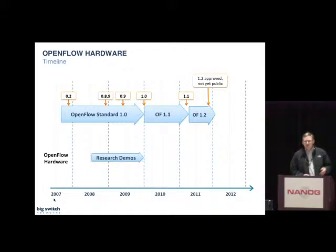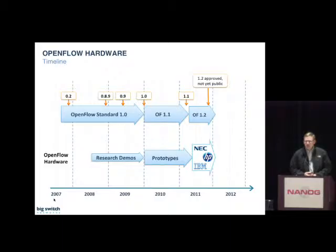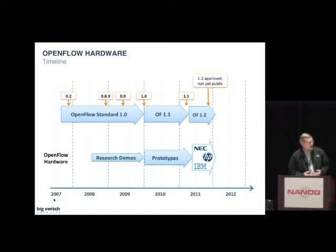Looking at how switches have been developed in parallel to the standards: in mid-2008 we started doing first research demos — the first ones were NEC, Cisco, Juniper, and HP. In 2010 we started seeing implementations move out of research labs and universities more into the development units of switch vendors. Then in May of last year, NEC, as the first company, offered a generally available OpenFlow switch, followed by IBM late last year and then HP early this year. So we've only been building generally available OpenFlow switches for about six months now.